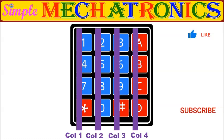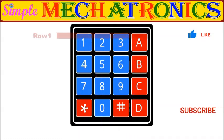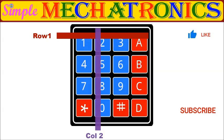There is no connection between any row to any column. Here, as an example, if you press on number 2, the connected row 1 and connected column 2 are cross connected and acts like a push button is pressed.